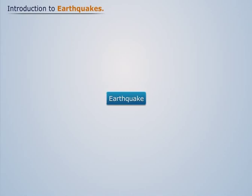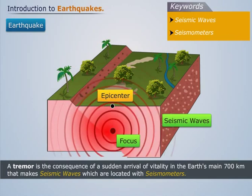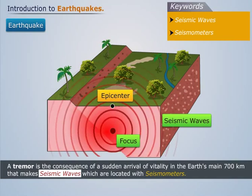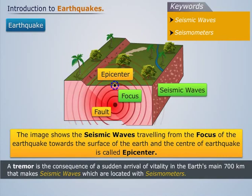Introduction to Earthquakes. An earthquake is the consequence of a sudden release of energy in the Earth's upper 700 km that generates seismic waves, which are detected with seismometers. The image shows seismic waves travelling from the focus of the earthquake towards the surface of the Earth. The center of the earthquake is called the epicenter.